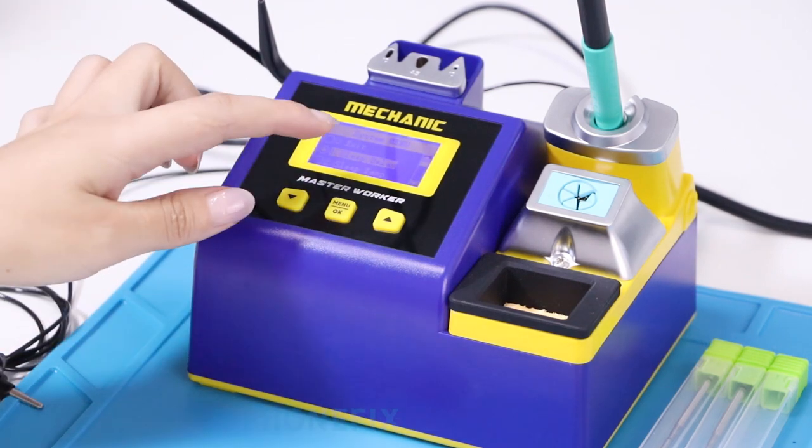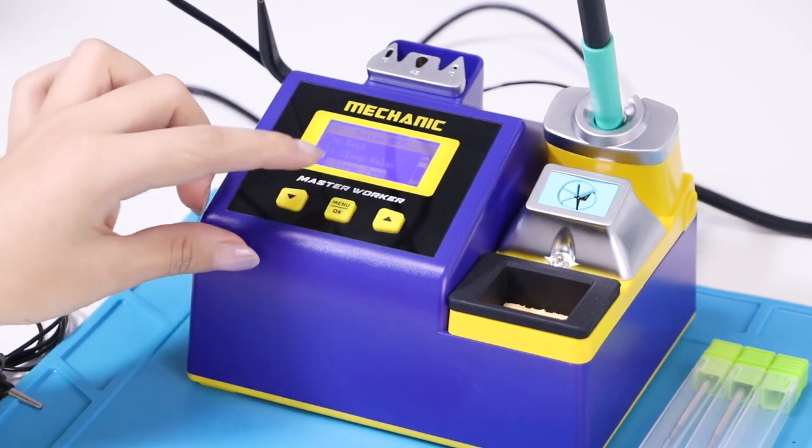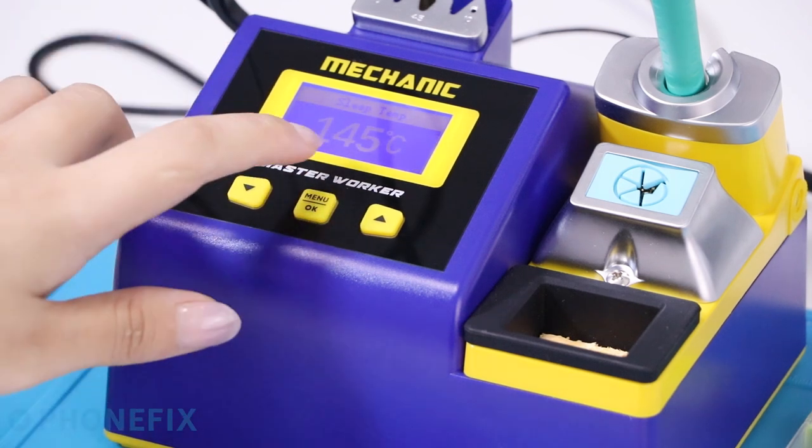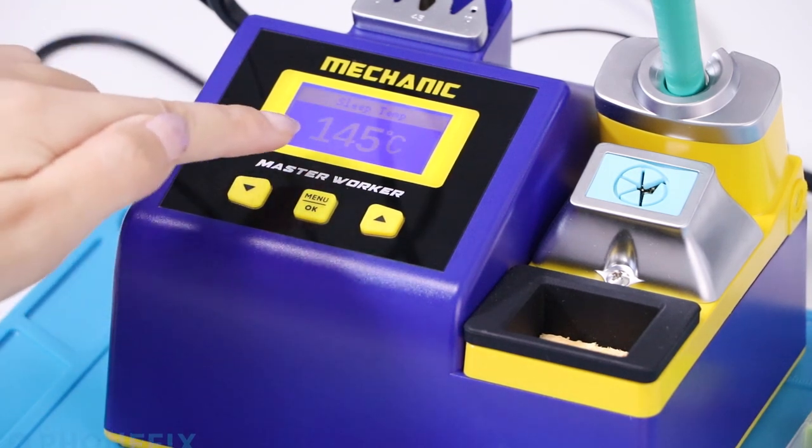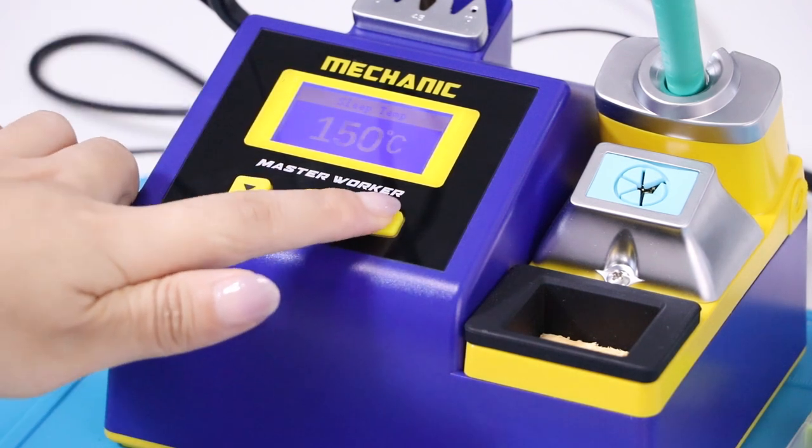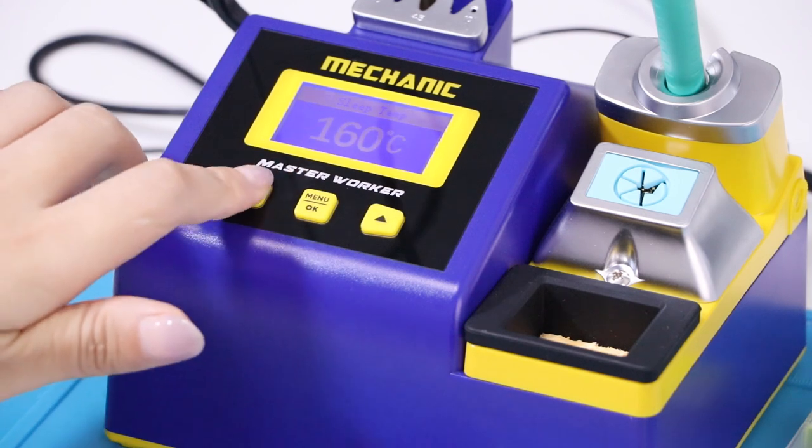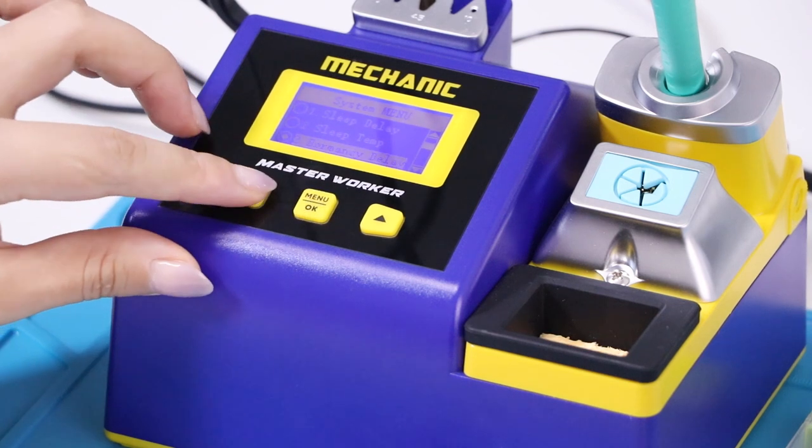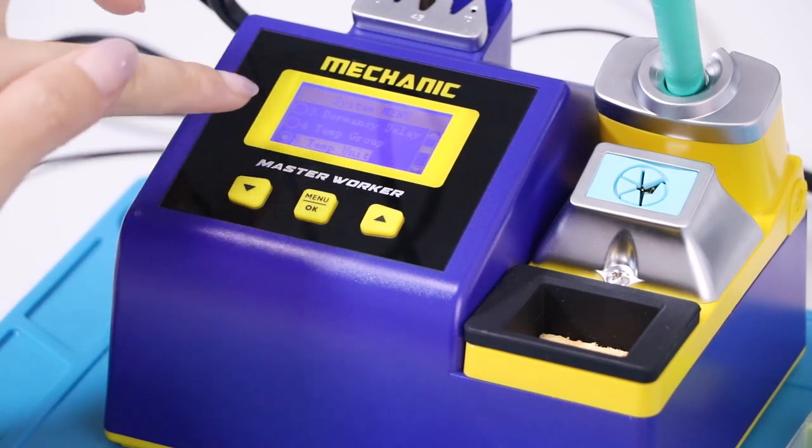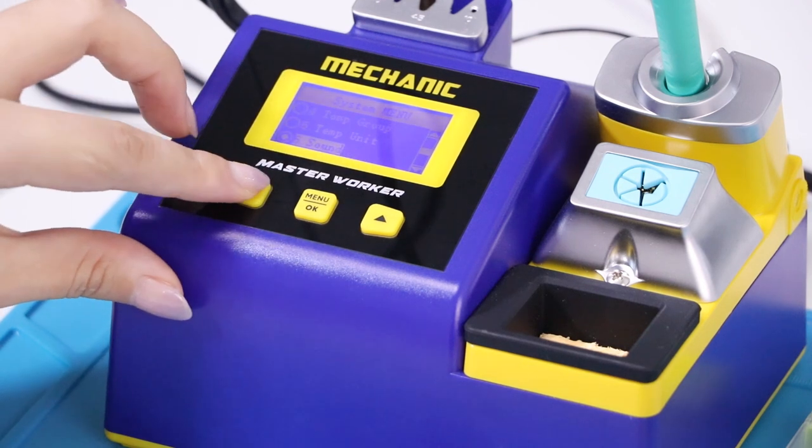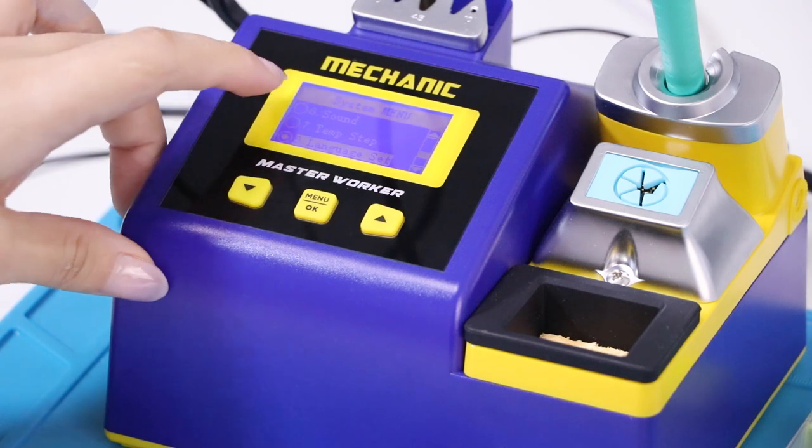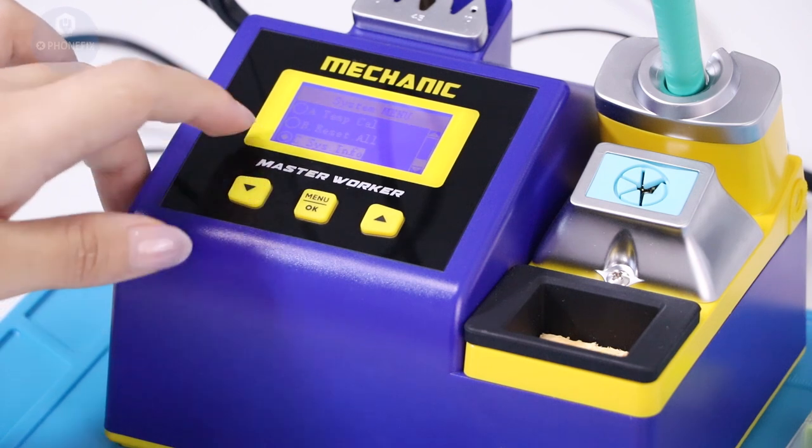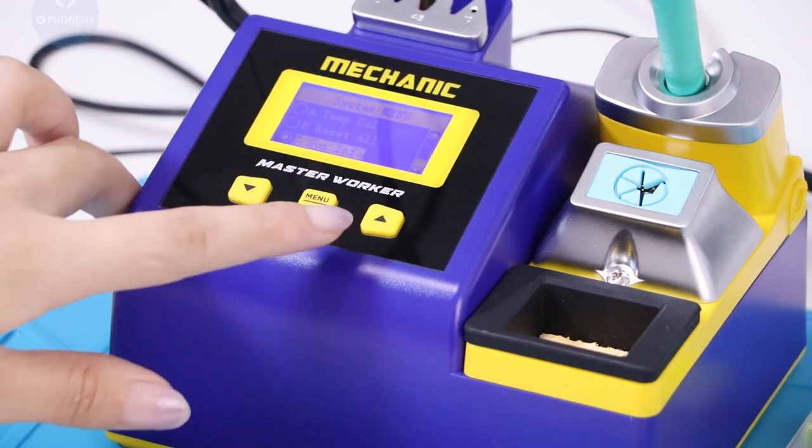You can set the sleep delay and the sleep temperature. Now we have set the temperature to reach 145. Besides, you can set the temperature growth and temperature rate, sounds, temperature, star language, last information, and you can set the system information.